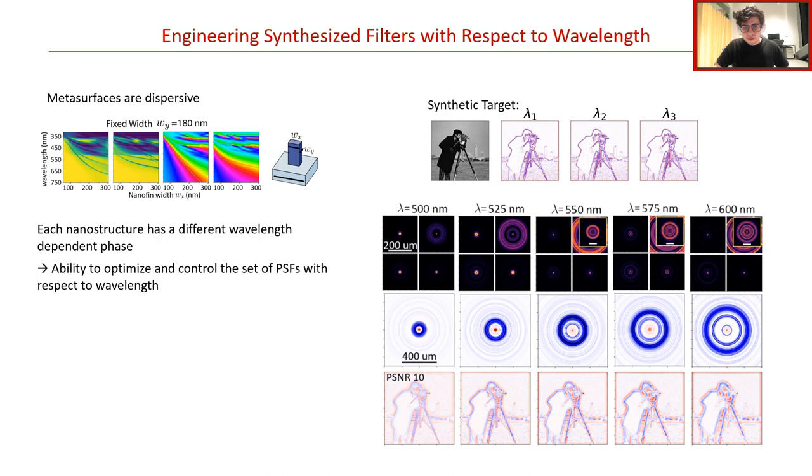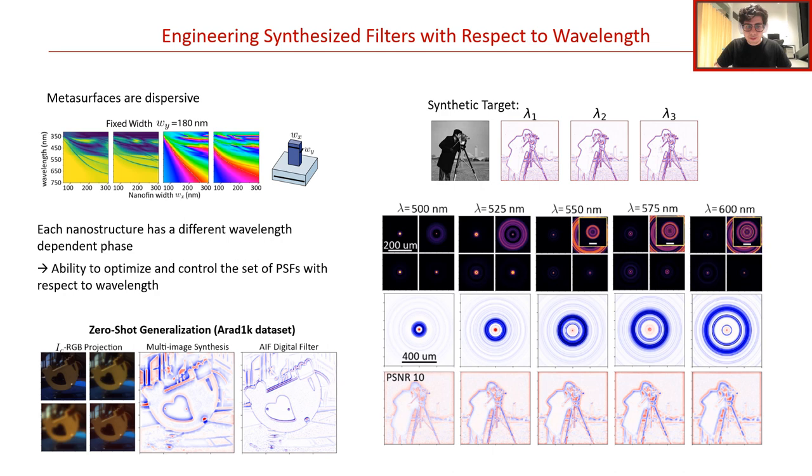We show that this learned lens can then be applied in a zero-shot setting to real hyperspectral scenes using radiance data from the ARAD 1K hyperspectral dataset. Of course, the results can be substantially improved by using a real dataset like this during training, although one can get away with synthetic data.